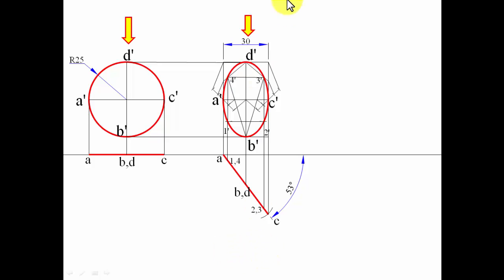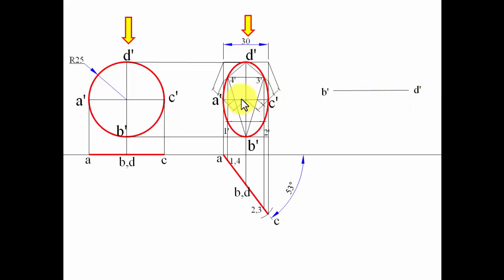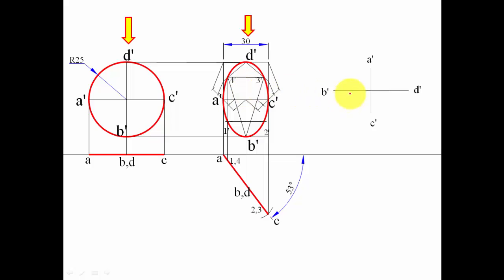Condition two states that the major axis — the 50 mm axis — must be kept horizontal. So I draw this axis horizontally: b-dash on one side, d-dash on the other, with the center marked. A-dash is to the left and above, c-dash is to the right and below. We now have the extreme points a, c, b, and d. The question is how to shift points 1-dash, 2-dash, 3-dash, and 4-dash from the previous diagram to this new one.